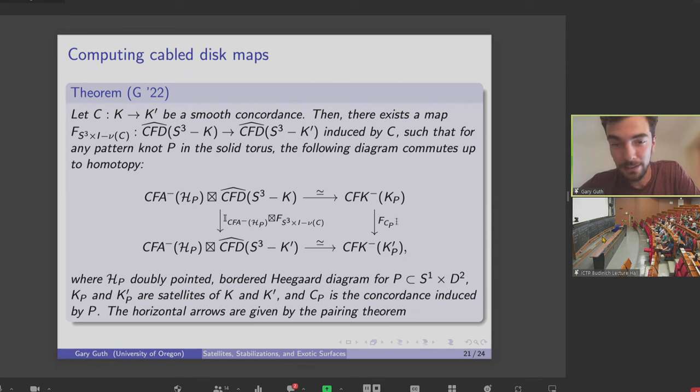We built this satellite concordance by first cutting out a neighborhood of the concordance and then gluing in a solid torus cross I. And you would really want the map induced by that concordance to be like the identity on the solid torus tensor product with some map induced by the complement of the concordance. And that's what we show.